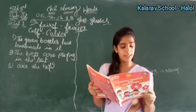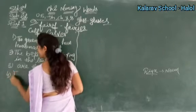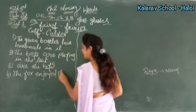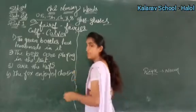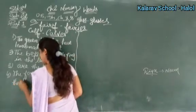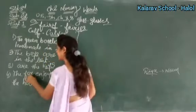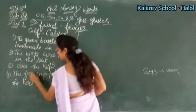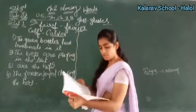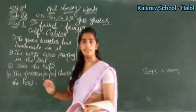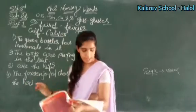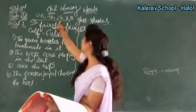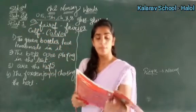Fourth sentence: 'The fox enjoyed chasing the hat.' Fox mein X aaya hai last mein — humne dekha tha ki jab bhi X hoga, toh ES use karenge: foxes. X hoga toh ES use karenge — clear.